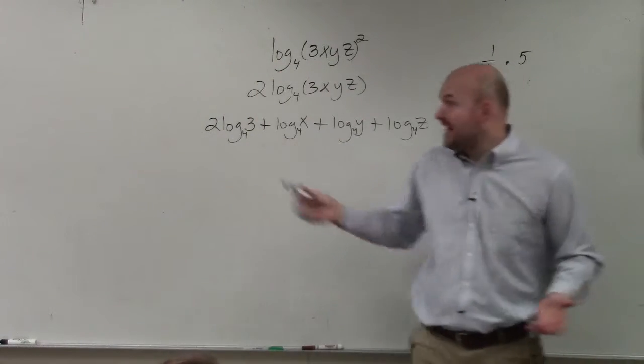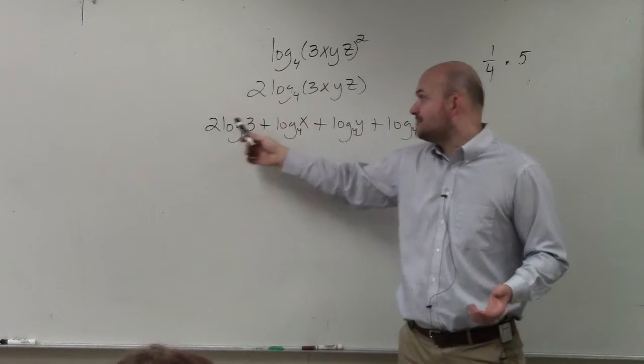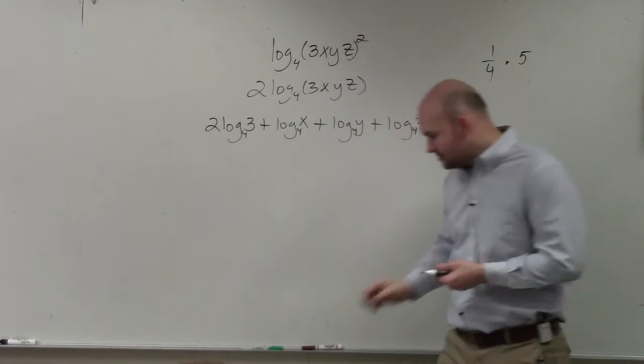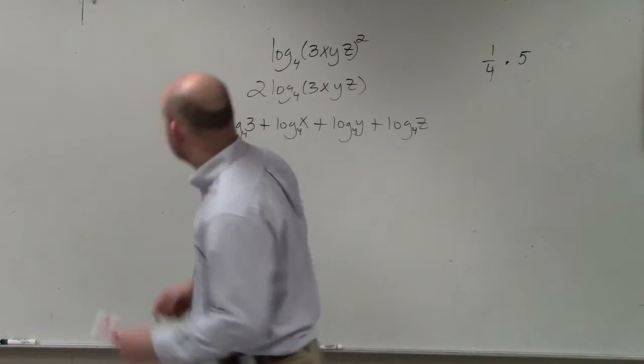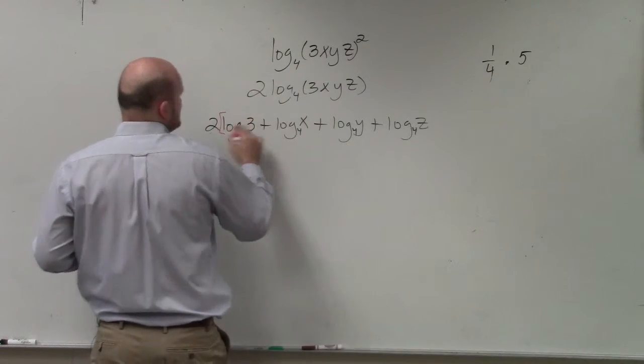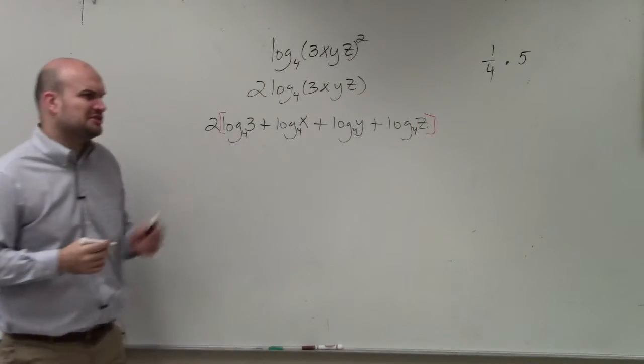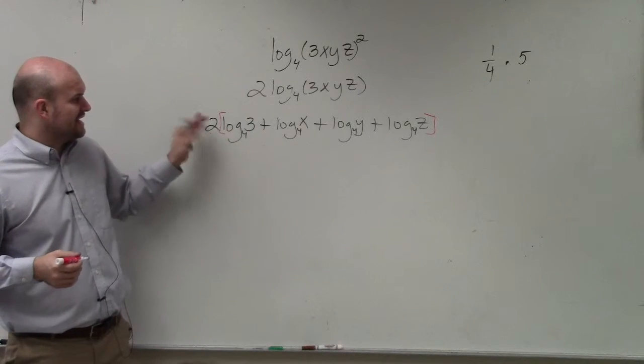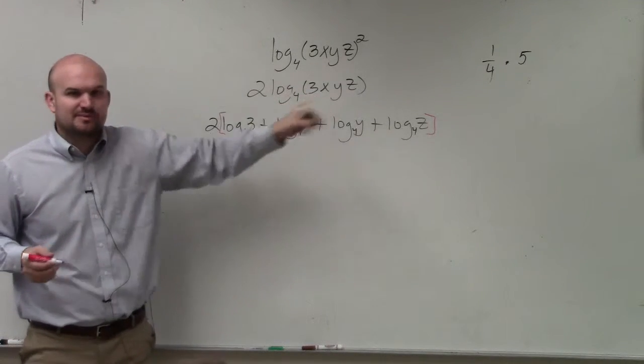Now, however, that 2 is applied to all of these, right? So we'd want to make sure we use our parentheses, or we could distribute it to all of them as well. But I think it's much easier just to use parentheses or brackets and just say the 2 would be distributed to all of those. Right?